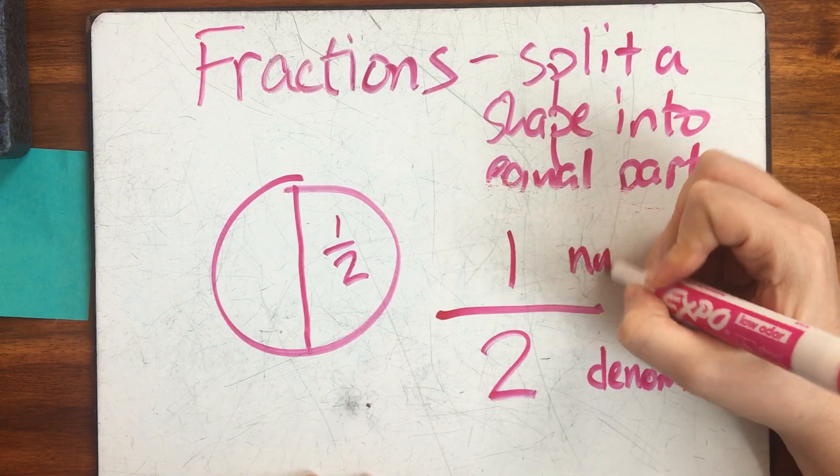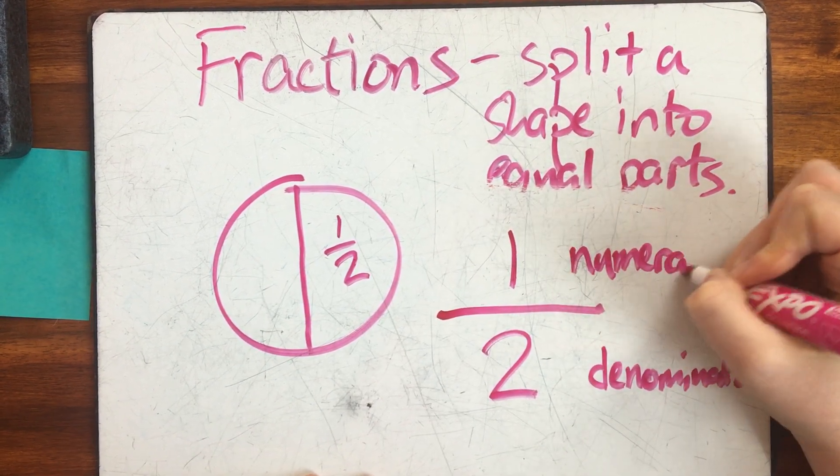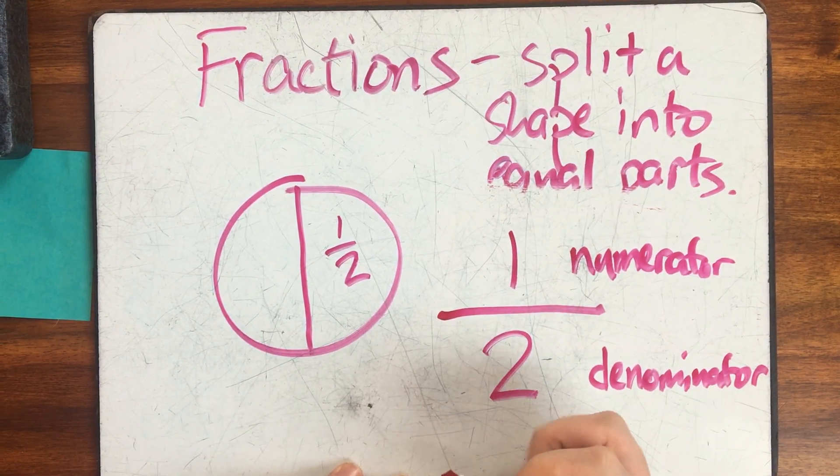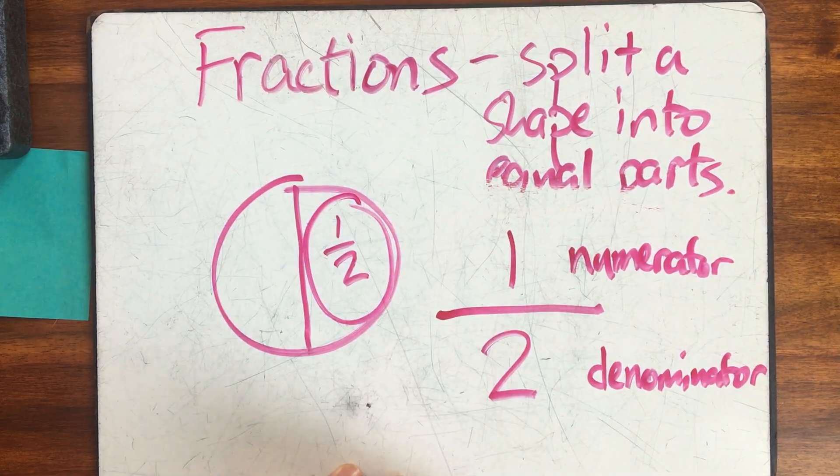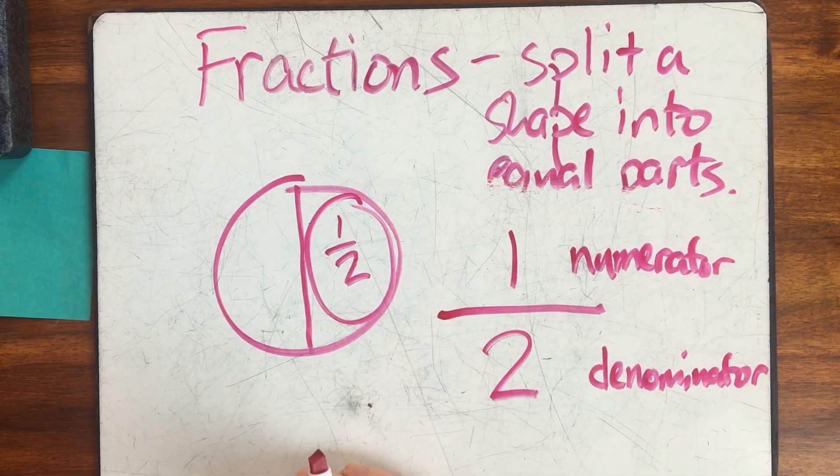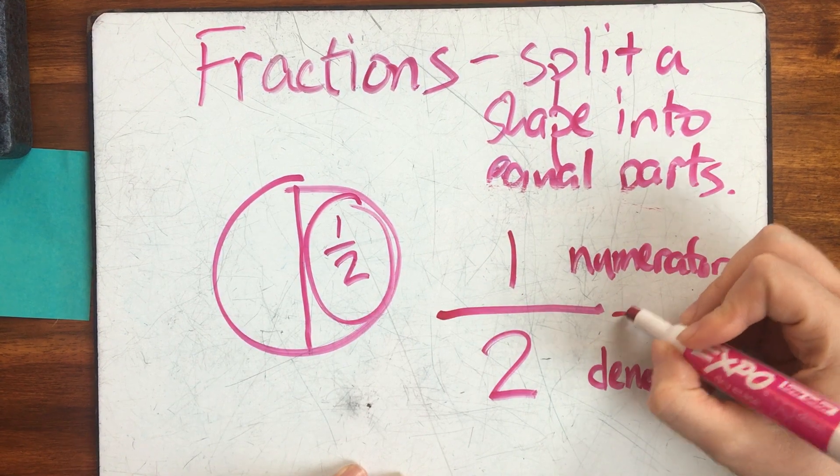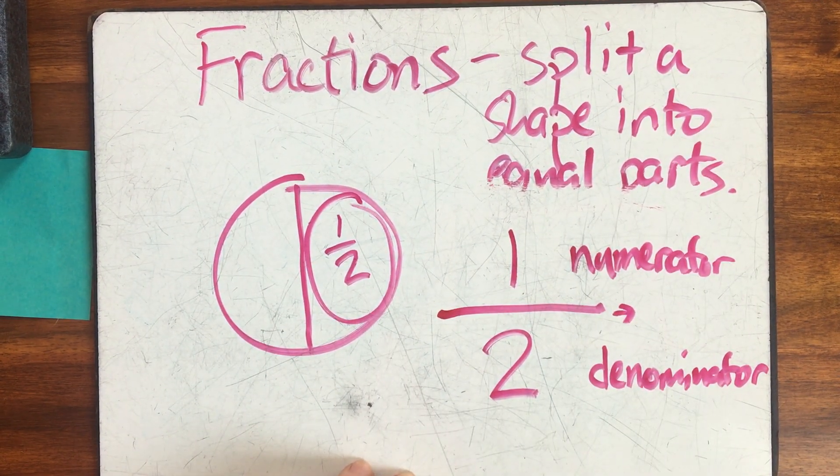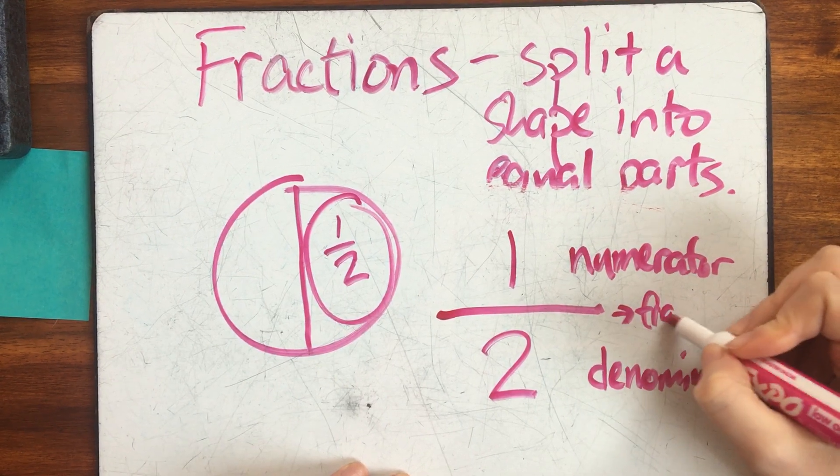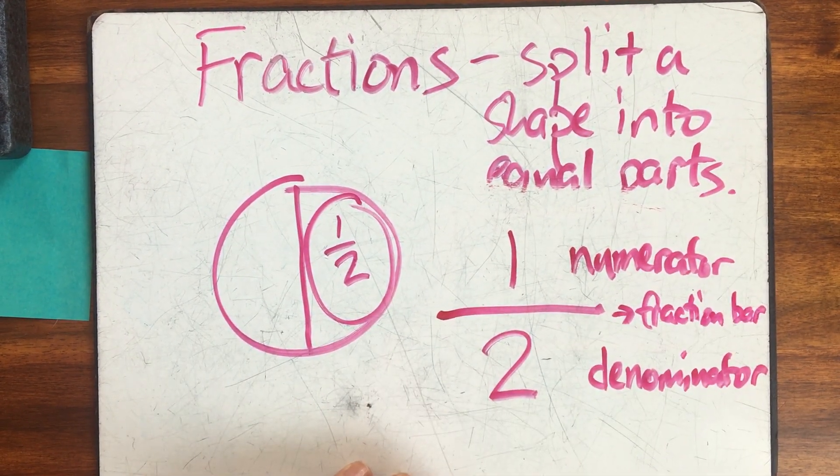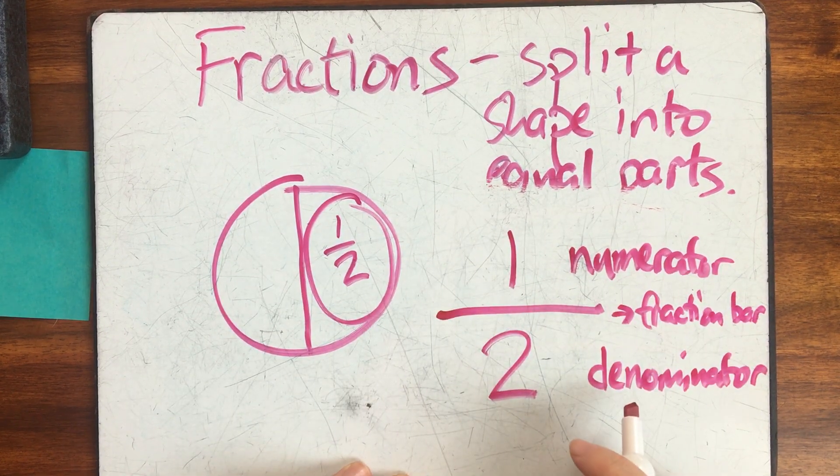The number on the top is called the numerator. The numerator tells how many parts you have. Here I have one part. So my numerator is one. And this right here is called the fraction bar. It's just a line that separates the numerator from the denominator.